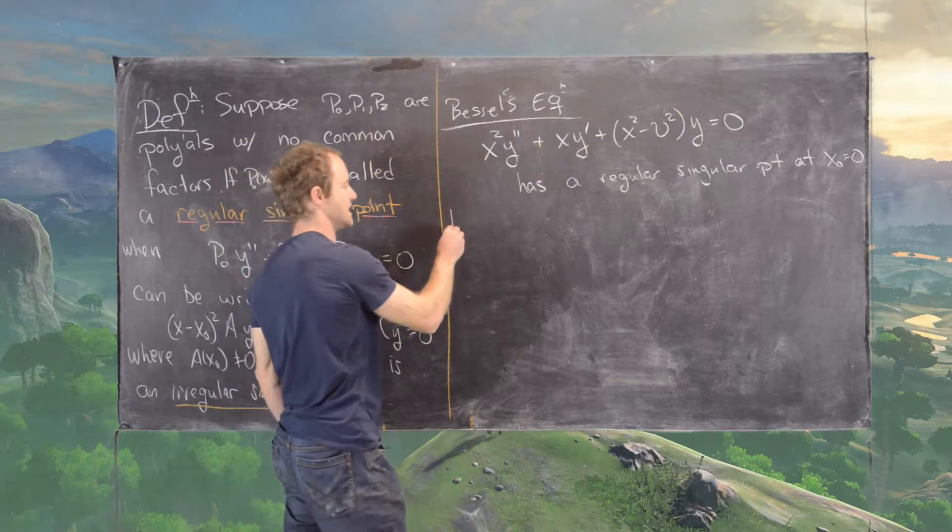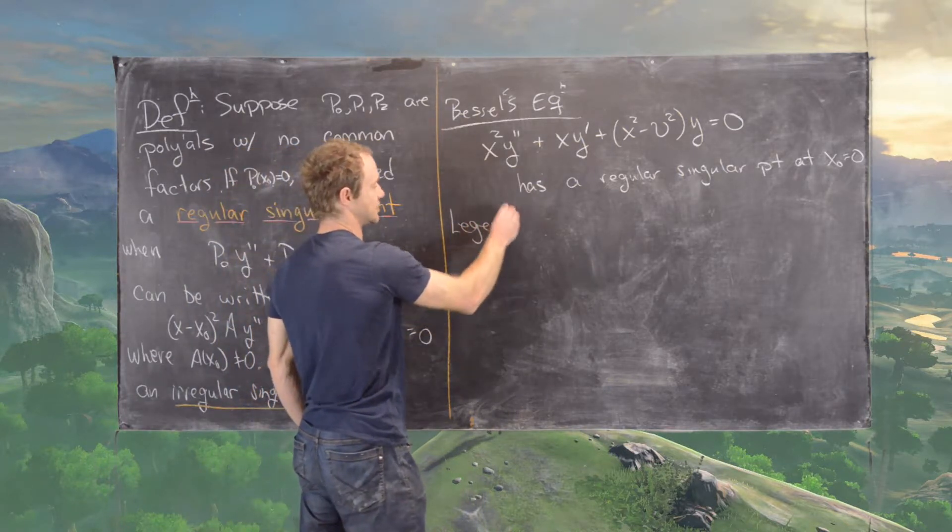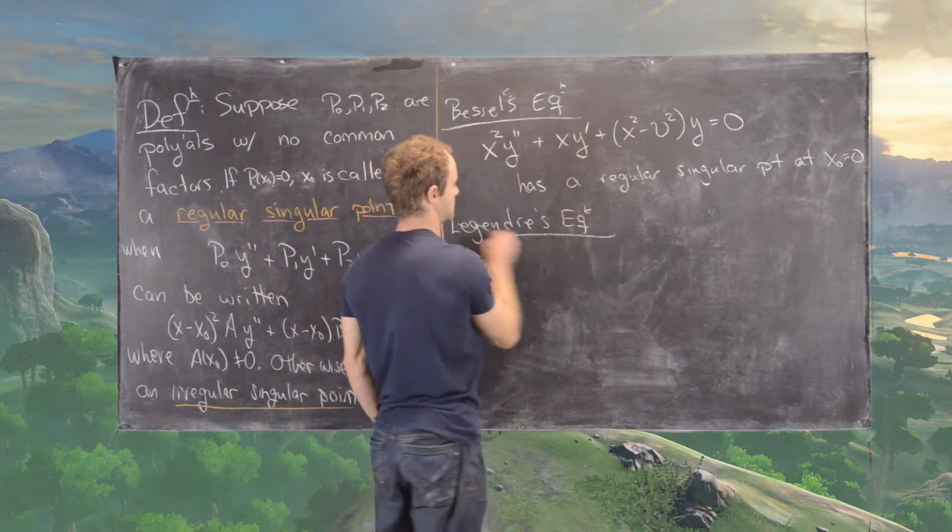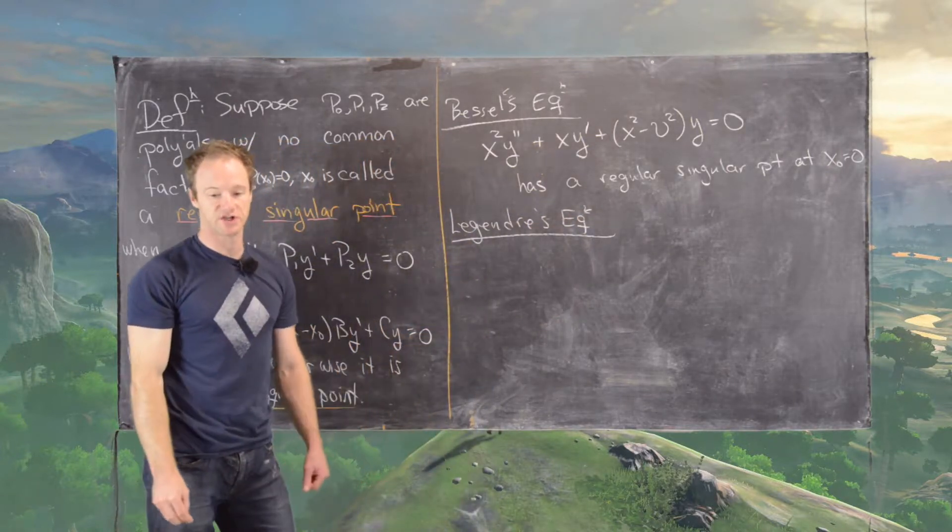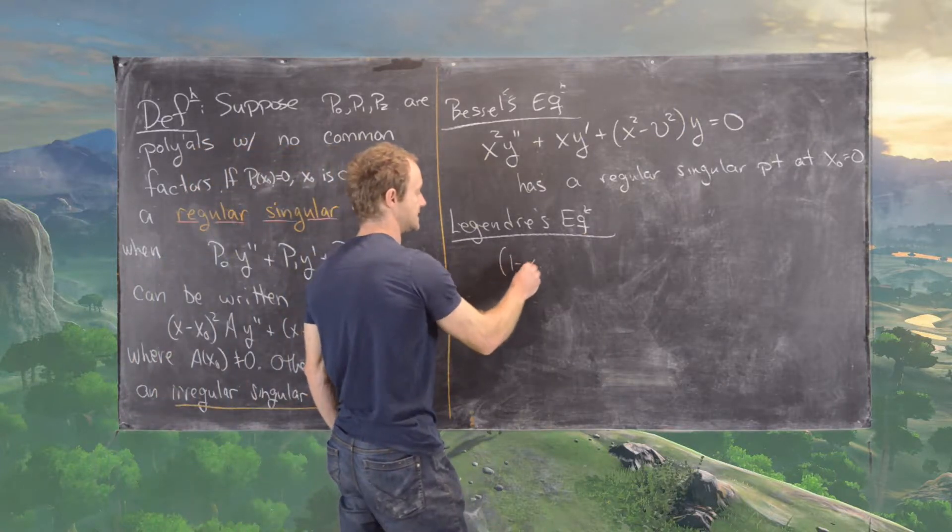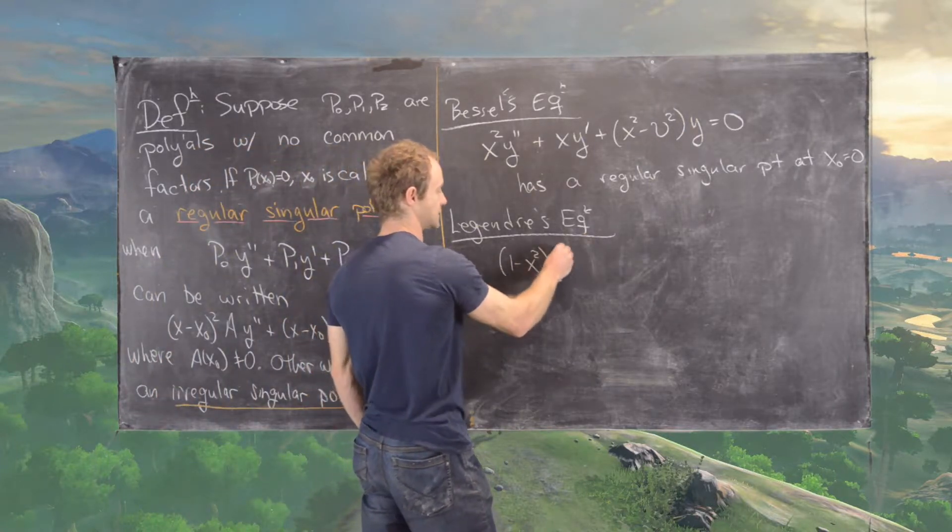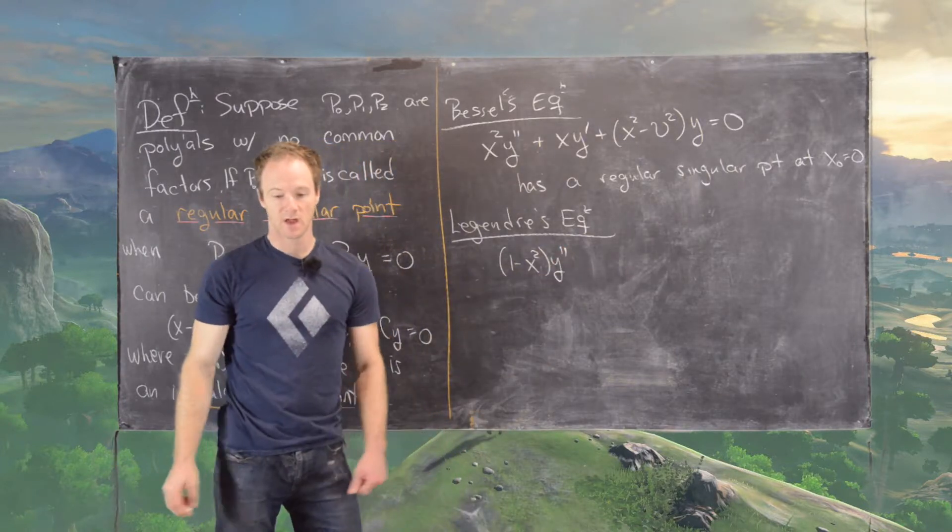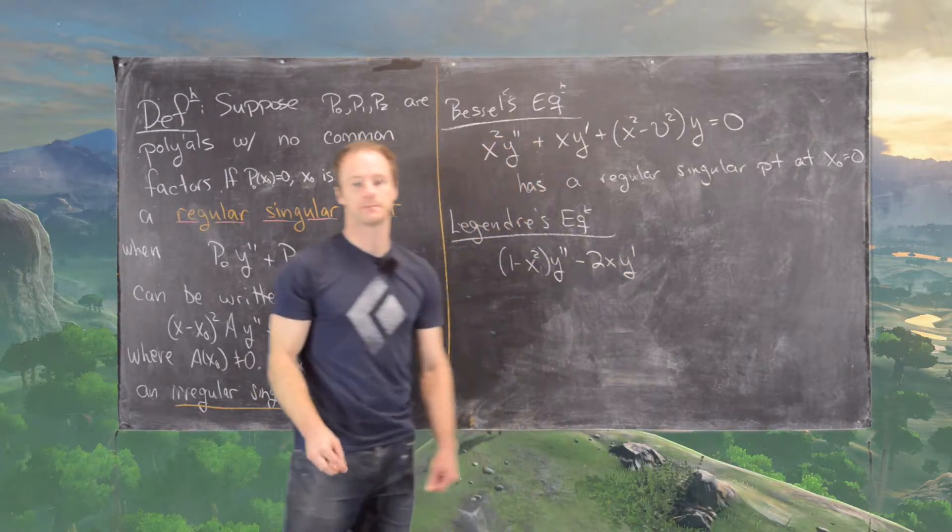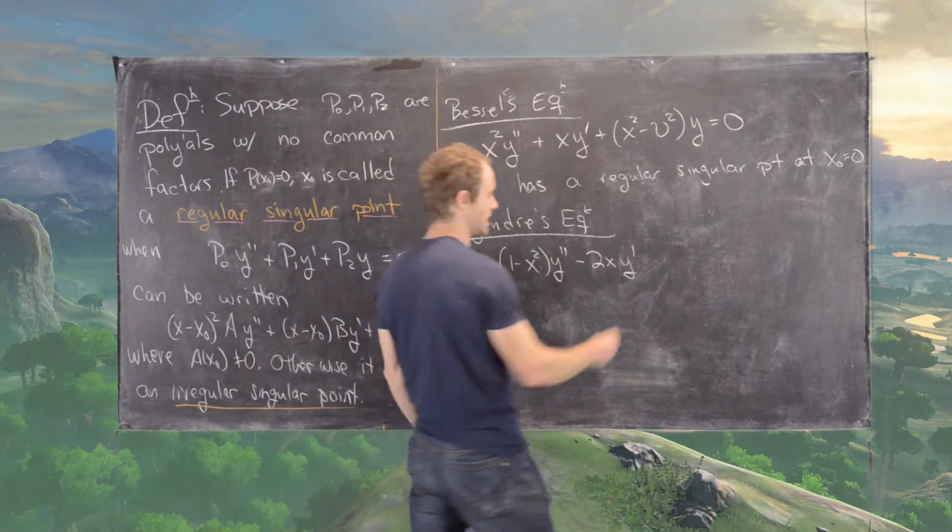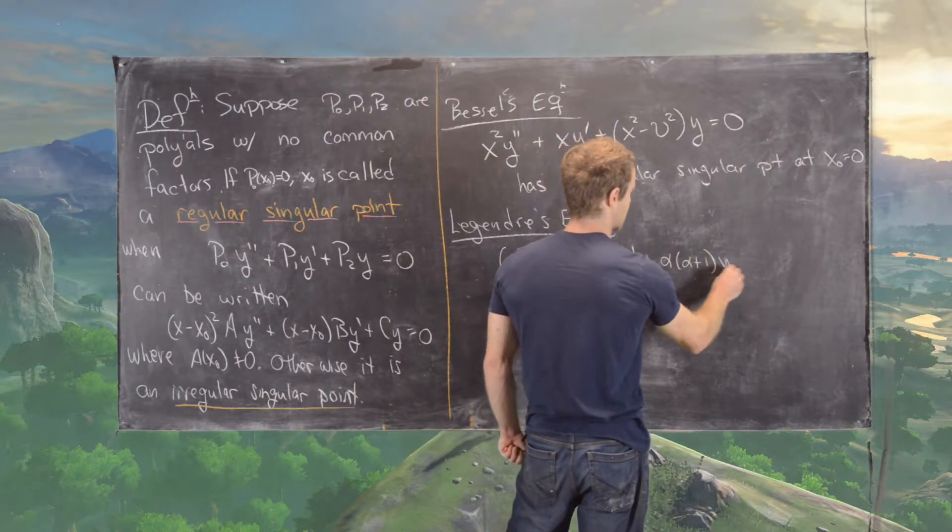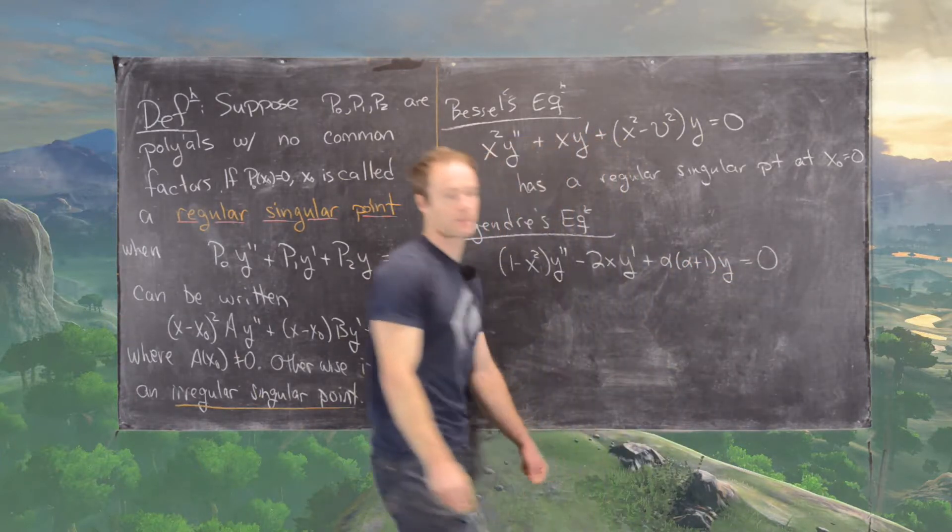Another one is Legendre's equation. Legendre's equation has the following form: 1 minus x squared times y double prime minus 2x times y prime plus alpha times alpha plus 1 times y equals 0.